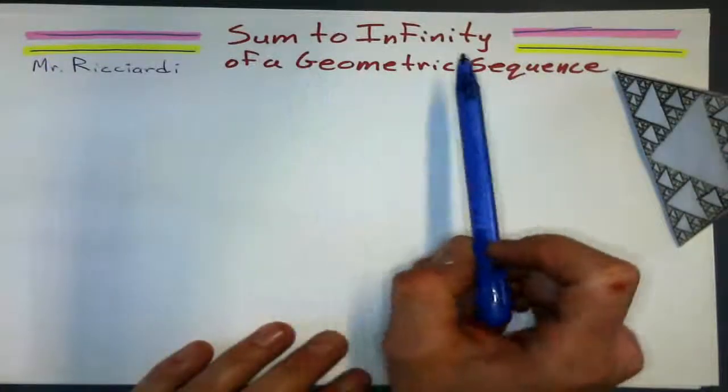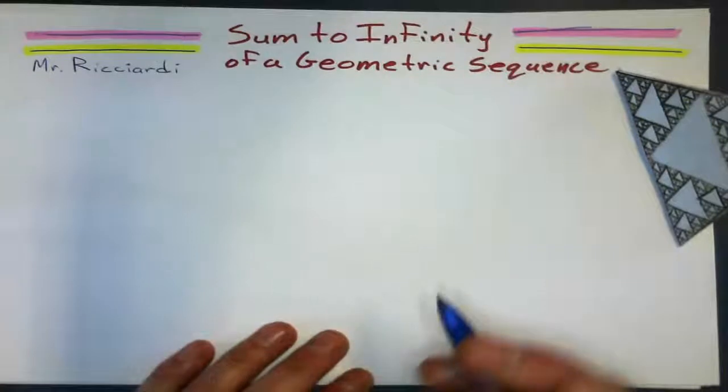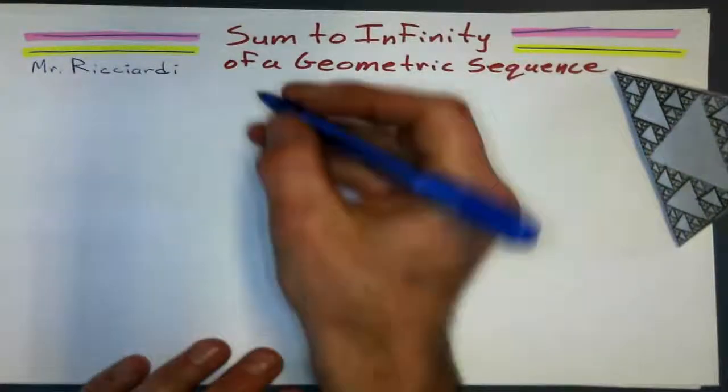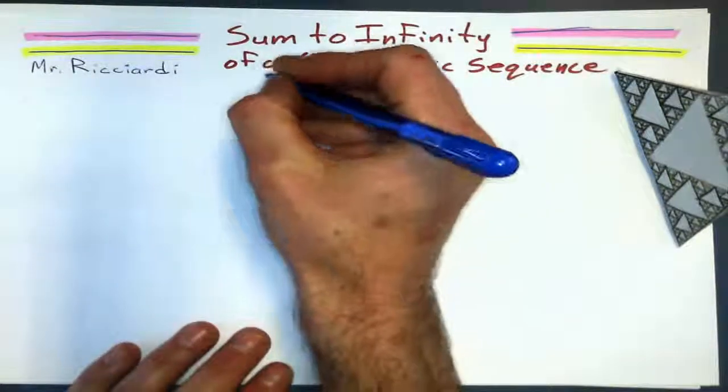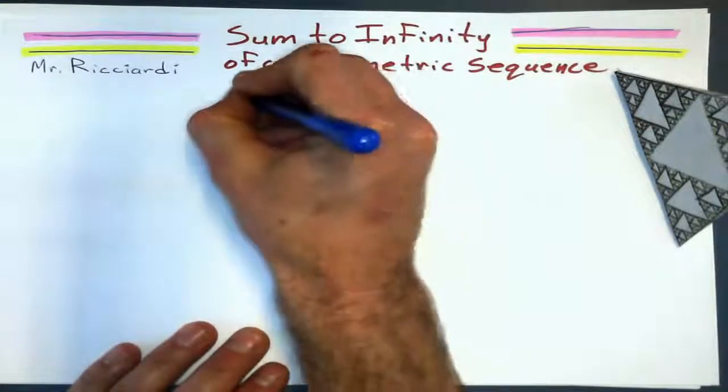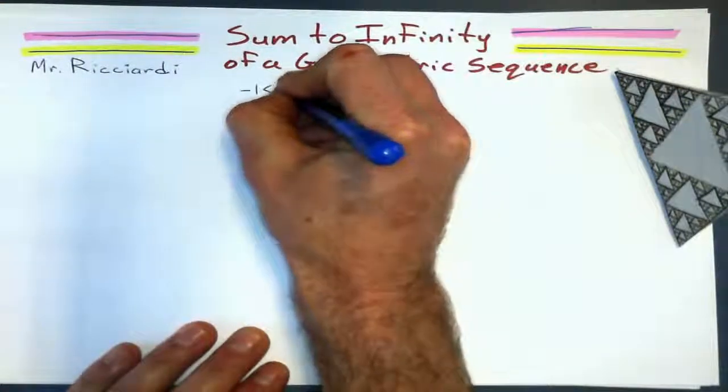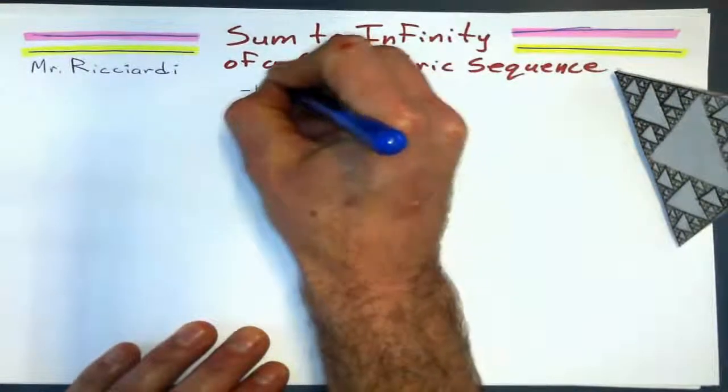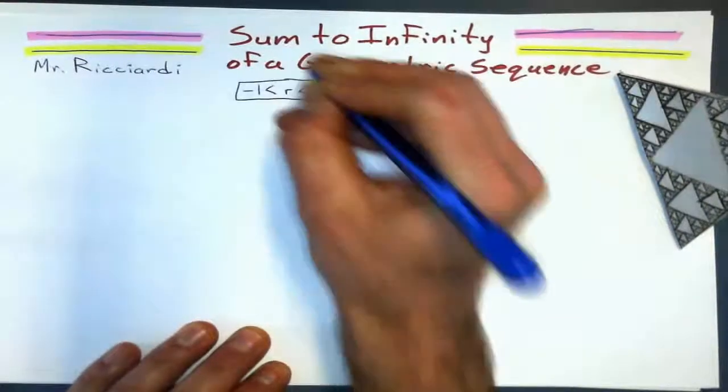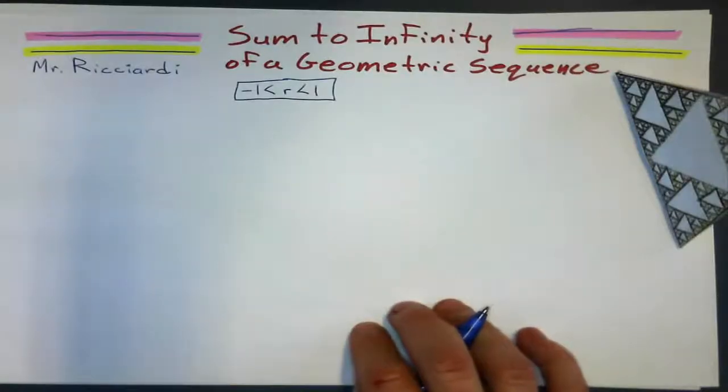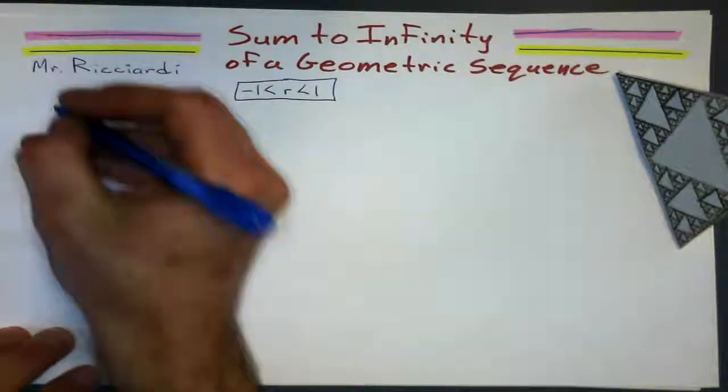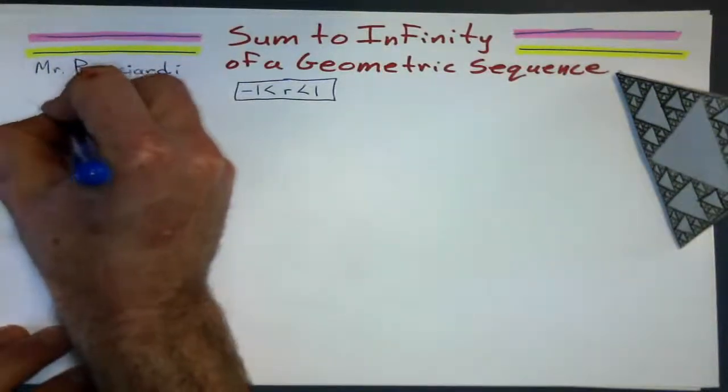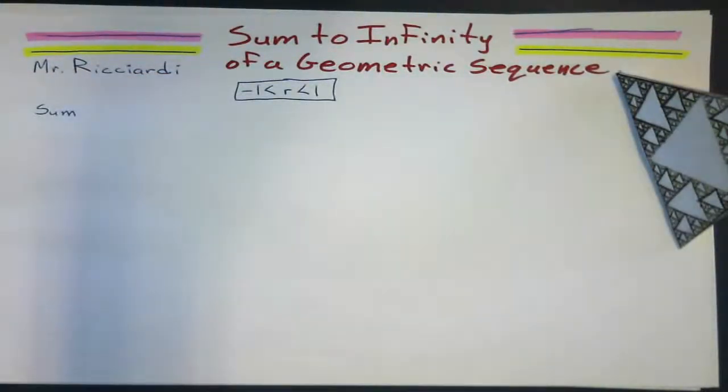We're looking at sum to infinity of a geometric sequence, and like I said, we are just dealing with a common ratio between negative 1 and 1. First thing we're going to look at, let's look at the sum of the first n terms.